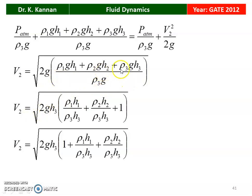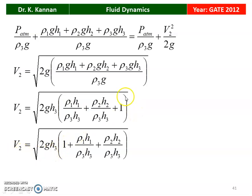Simplifying and taking H3 outside: V2 = √[2G·H3·(ρ1·H1/(ρ3·H3) + ρ2·H2/(ρ3·H3) + 1)]. Rearranging: V2 = √[2G·H3·(1 + ρ1·H1/(ρ3·H3) + ρ2·H2/(ρ3·H3))]. That is the answer to the question.